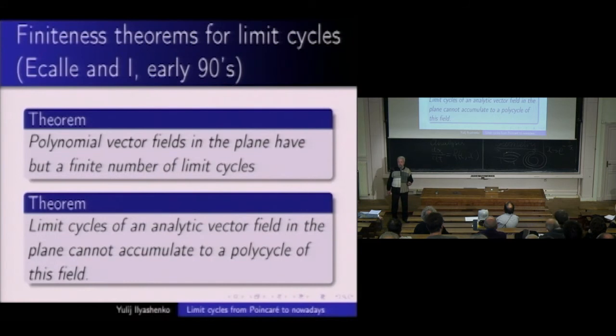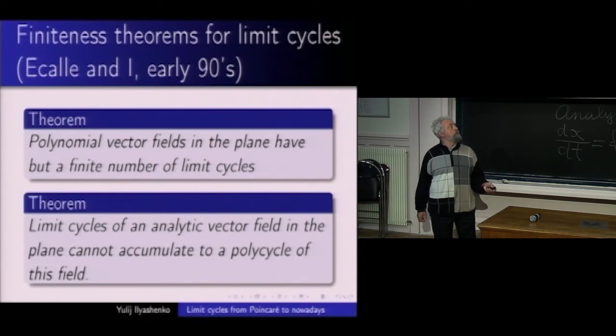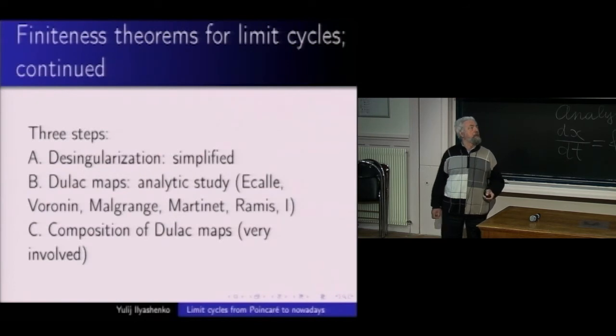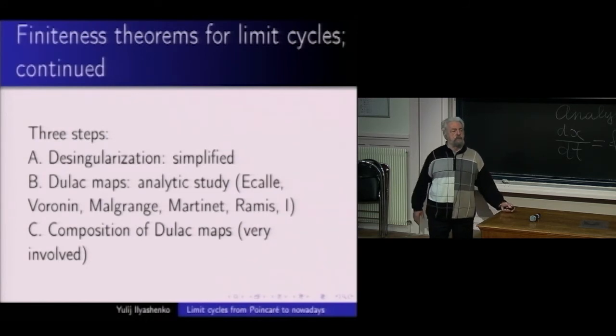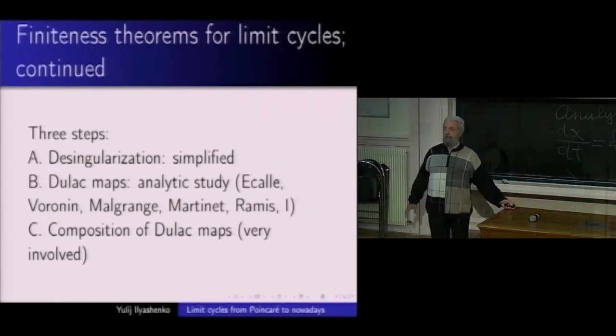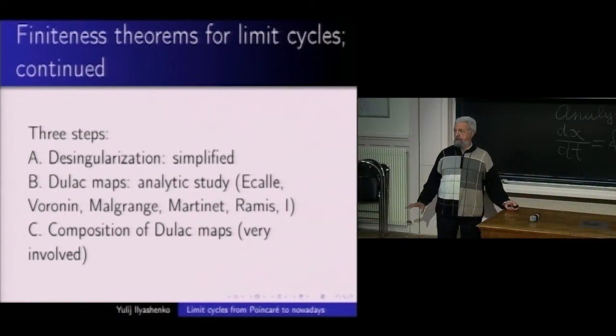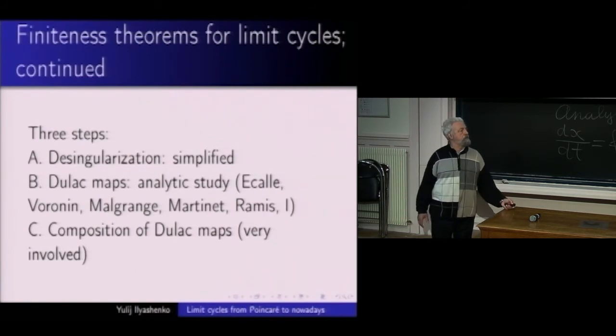In the beginning of 90s, the following finiteness theorems for limit cycles were proved. The polynomial vector field in the plane have but a finite number of limit cycles. Exactly what Dulac claimed. And limit cycles of an analytic vector field in the plane cannot accumulate to a polycycle of this field. Once again, let us return to three steps that Dulac have made. Desingularization stays as it was. The description of the Dulac map requires quite new tools. And the last step is composition of the Dulac maps. It is a very difficult part and it is mostly the problem to be solved in the proof.